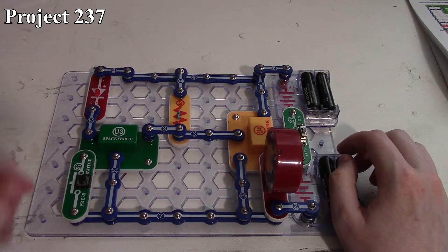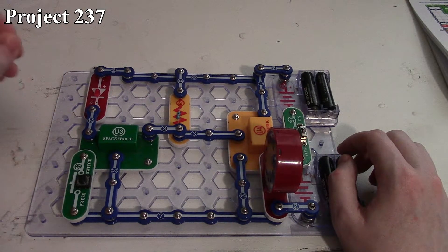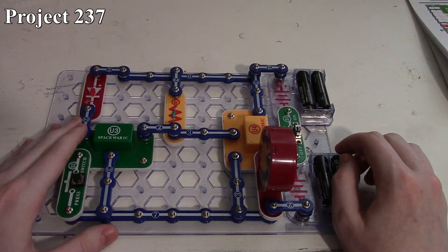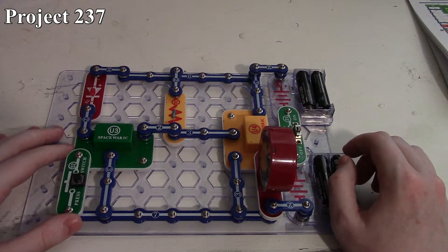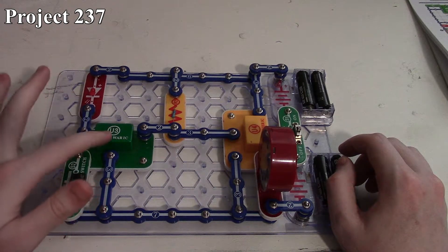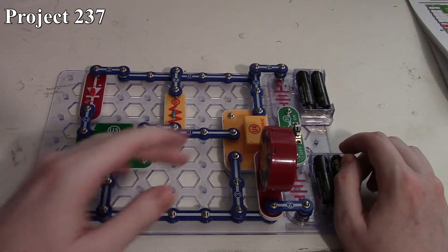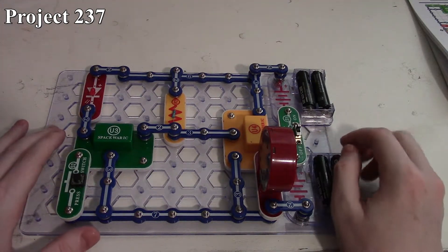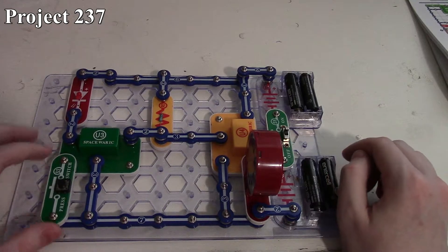We also have our little red LED here, which will flash and whatnot, depending on what sounds the Space War IC is putting out. So that gives us a little visual indicator as well. We trigger the Space War IC with our press switch while the overall circuit is turned on and off with our slide switch.